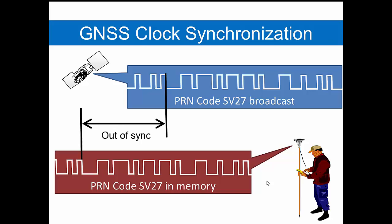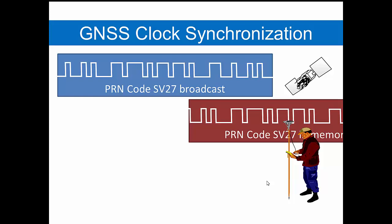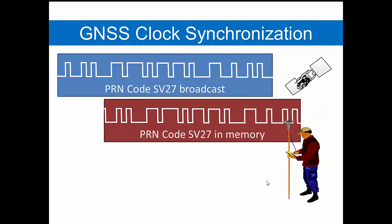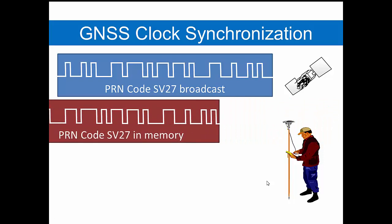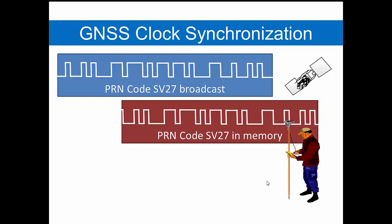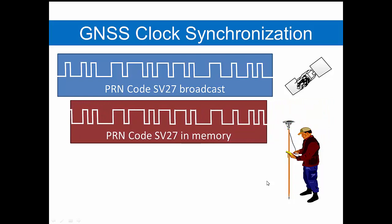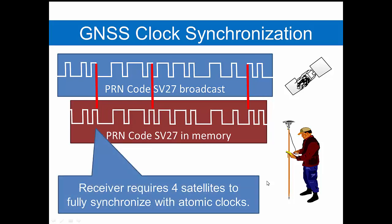Once it recognizes that data stream coming from a particular satellite, it takes numerically that stored memory version of that song and it slides it back and forth in time until the song in the receiver's memory matches up with the song being received from the satellites. And all the satellite clocks are synchronized together. So once your receiver clock synchronizes with the satellite clocks, then we can start to measure distance. This is an important part of the wake-up procedure with your receiver.